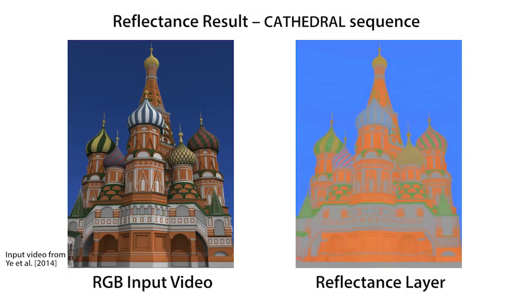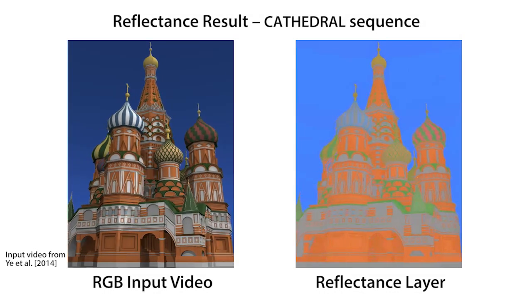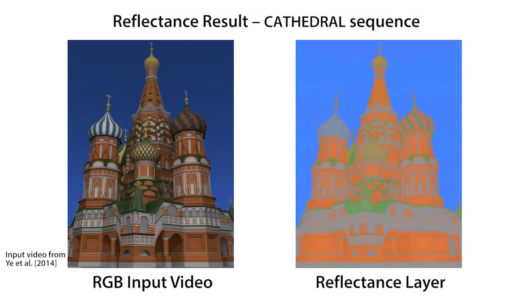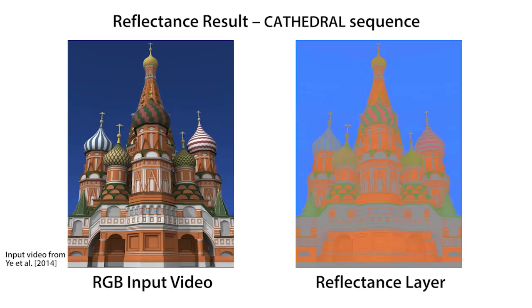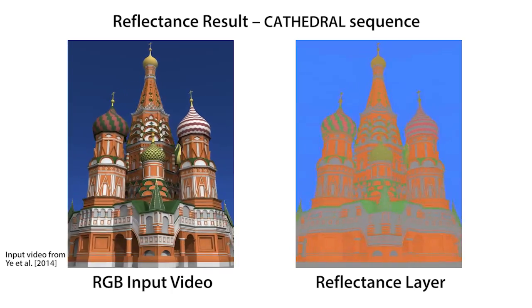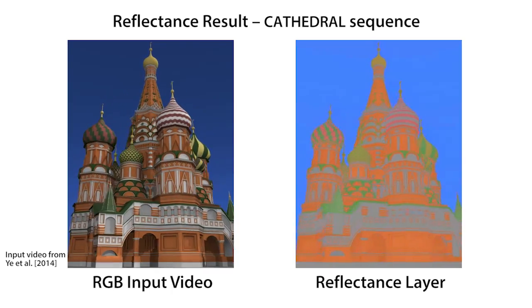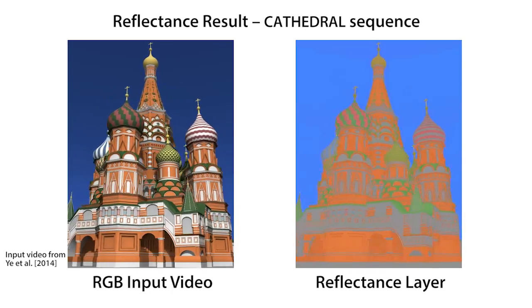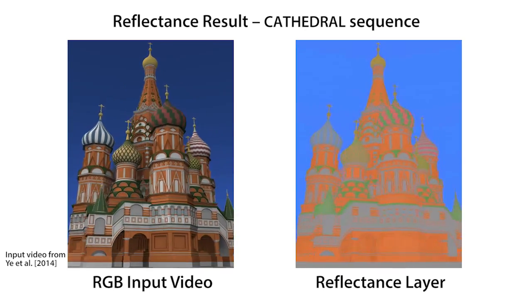We evaluate our method vis-à-vis the various energy terms in our cost function. Our full approach produces a reflectance layer that is temporally and spatially coherent, even in the presence of drastic illumination changes.